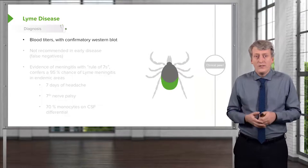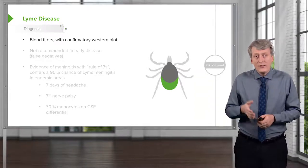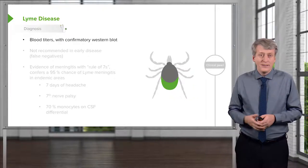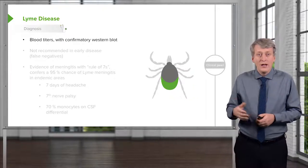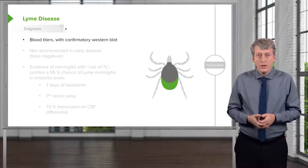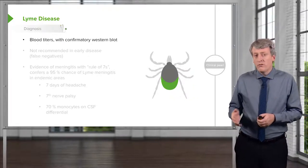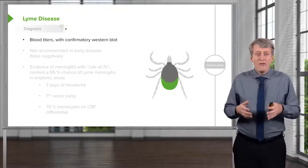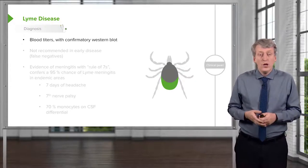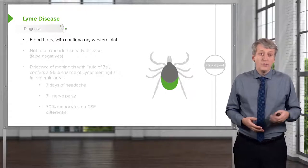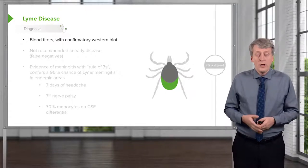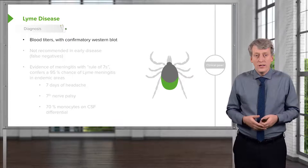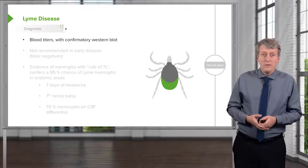Lyme disease is diagnosed by testing blood titers using an ELISA test, and a confirmatory western blot. We do a confirmatory western blot because the Lyme titers have a high false positive rate. For example, a patient with Epstein-Barr virus may test positive for Lyme disease erroneously, but the western blot will typically be negative.